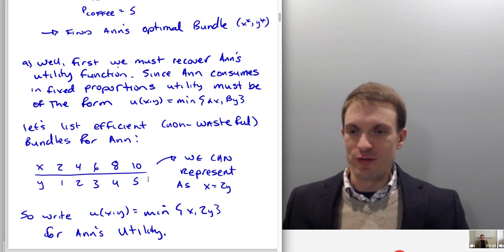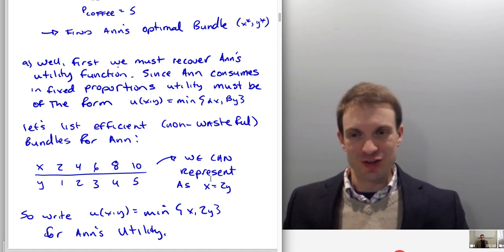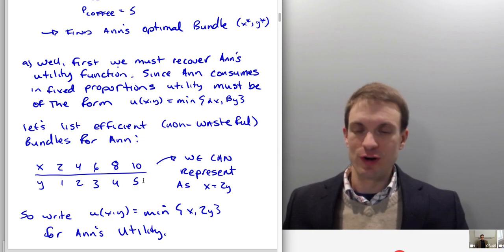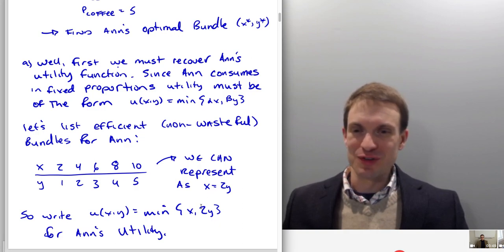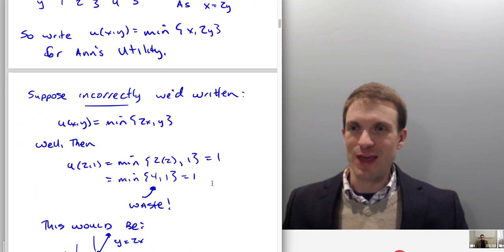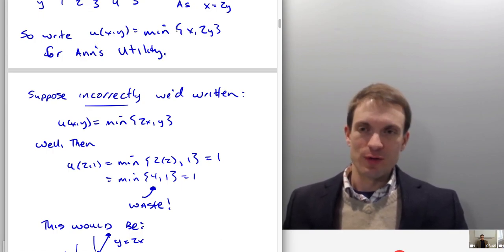This is going to give rise to the following utility function. Remember, when going from the utility function, the line x = 2y is the ray through the origin that collects the corners of the indifference curves — I just replace the comma with an equal sign. Here I'm doing the opposite: I'm going from an equal sign, placing a comma there, and dropping this into the minimum operator. There's my utility function. Suppose we had incorrectly written the opposite form.